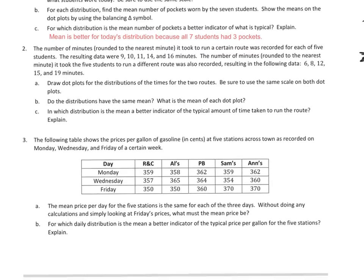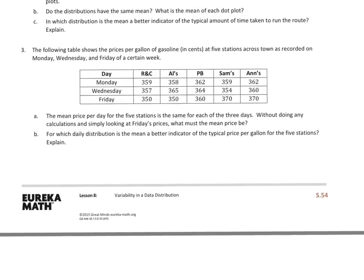And there's my statement right there. So let's go to 2. Actually, let's skip 2. Let's go to 3. So for 3, the following table shows the price per gallon of gasoline in cents at 5 stations across town as recorded on Monday, Wednesday, and Friday of a certain week. The mean price per day for the 5 stations is the same for each of the 3 days.